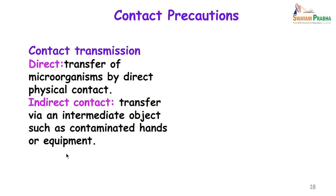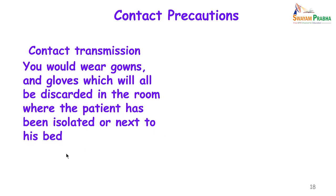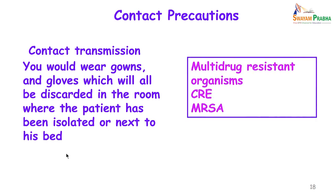In contact transmission — preventing transmission by direct or indirect physical contact — you must wear gowns and gloves, which should be discarded in the room where the patient has been isolated or next to the bed where the patient has been cohorted. These precautions are usually done for multidrug resistant organisms like carbapenemase resistant Enterobacteriaceae or methicillin resistant Staphylococcus aureus.